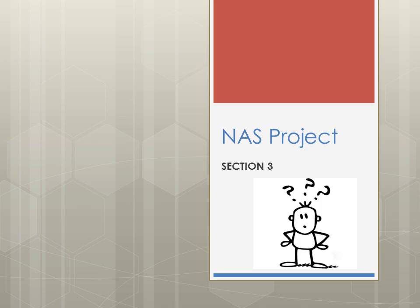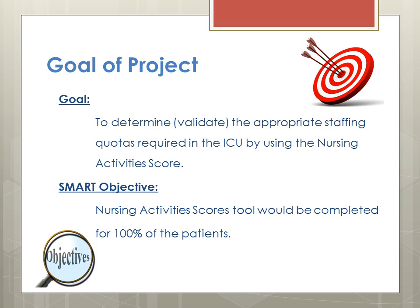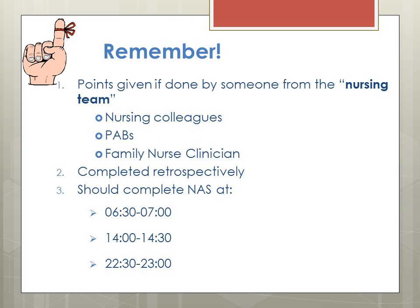In this presentation, we will be talking more about the items. To help our understanding, we picked 5 questions out of 23 with specific examples so that the questions are interpreted in the same way. As a reminder, points are given if and only if the activity was done by someone from the nursing team: your nursing colleagues, PAB, and the family nurse clinician.